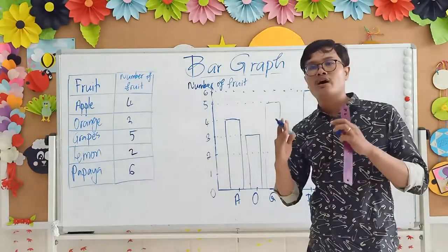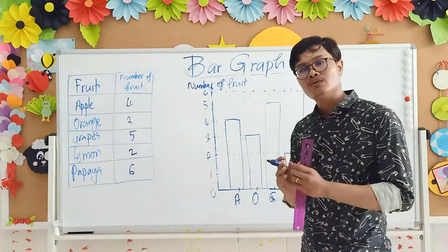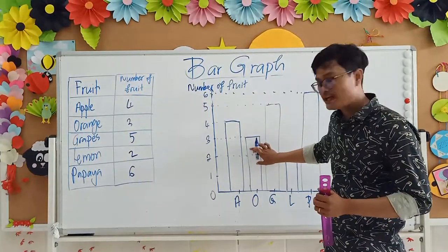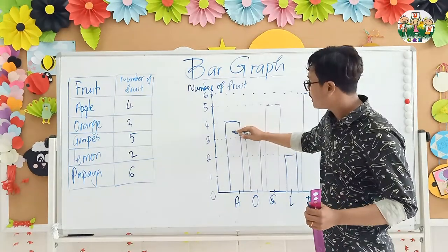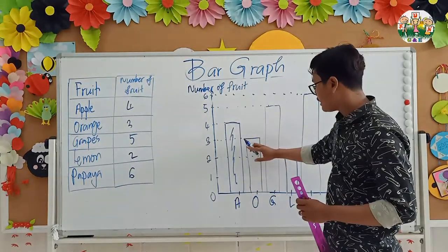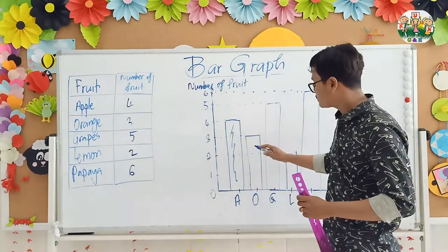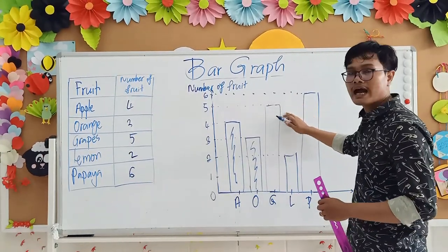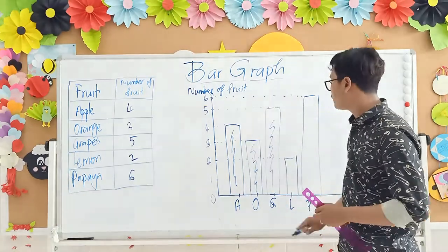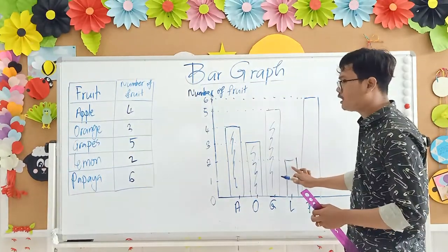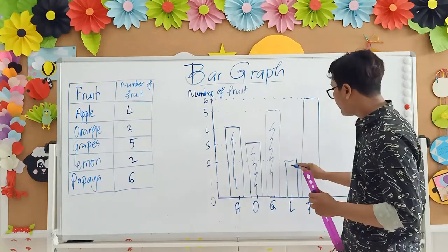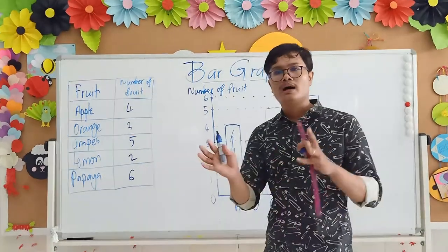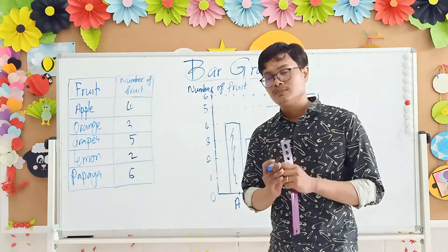After that, if you want to make your graph more beautiful and look awesome, you need to color. For example, this one you can put red color. You can put orange color. You can draw a purple color. You can draw with color, any color that you like. And this one as well, you can make it look more beautiful and awesome.